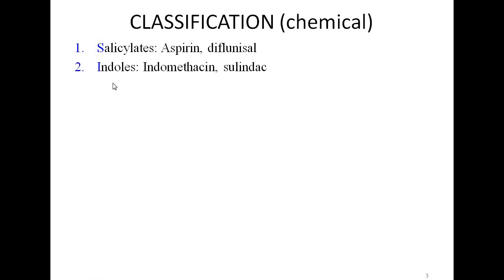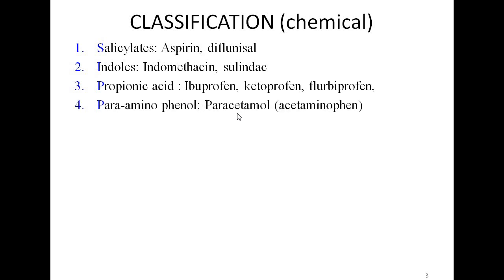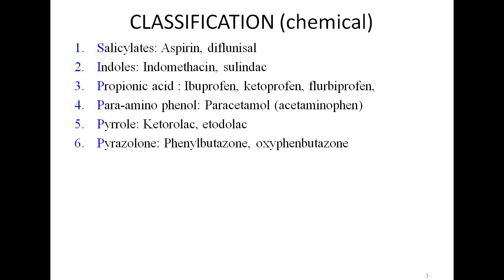Then we have indoles, under which we have indomethacin and sulindac. Propionic acid derivatives, very widely used, include ibuprofen and ketoprofen. Another very widely used and quite safe NSAID is paracetamol, which comes under the para-aminophenols. Ketorolac and etodolac are pyrrole derivatives. Oxyphenbutazone and phenylbutazone are pyrazolone derivatives. Then we have the more recently introduced oxicams, namely piroxicam, tenoxicam, and meloxicam.